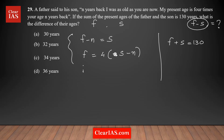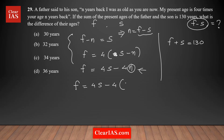Opening the bracket in equation 2: f equals 4s minus 4n. From equation 1, n equals f minus s. Substituting n into equation 2: f equals 4s minus 4(f minus s), which expands to 4s minus 4f plus 4s. Bringing f to one side: 5f equals 8s. This gives a direct relationship between f and s.